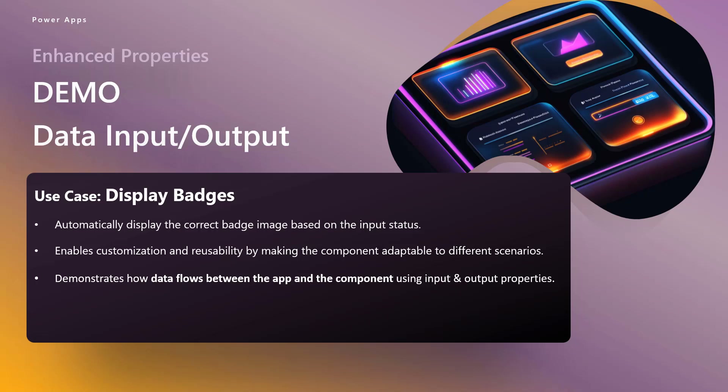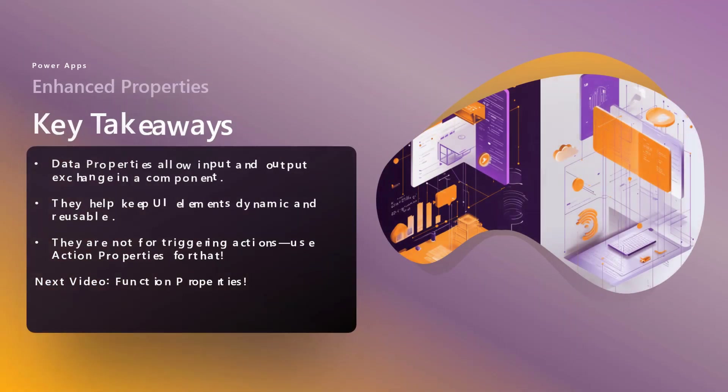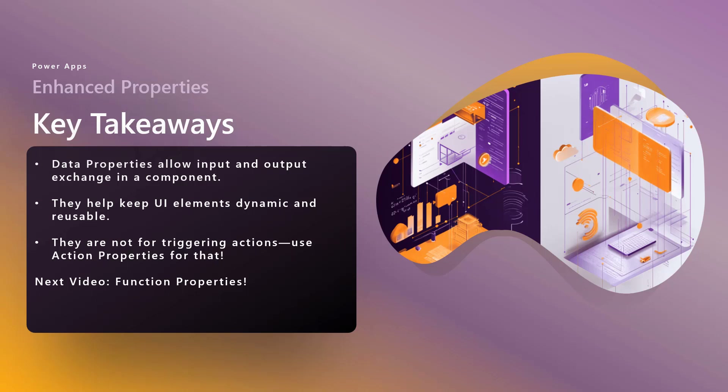So the key takeaways for data properties: they allow input and output to exchange data within a component. They can help keep things consistent — if you've got a collection of icons or logos, you could create a component that includes all of those things and all your apps could inherit it from a component library. But again, they're not for triggering actions — you'd use an action property for that. Next up, check out the next video where we'll talk about function properties. These are cool because they allow you to invoke a function either within the component or the app. See you in the next video — thanks everybody.